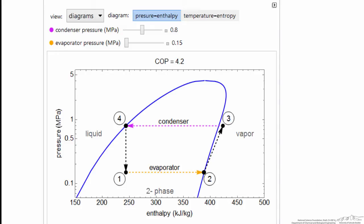Going from point one to point two, we evaporate liquid in a liquid-vapor mixture to have all vapor at saturation conditions.